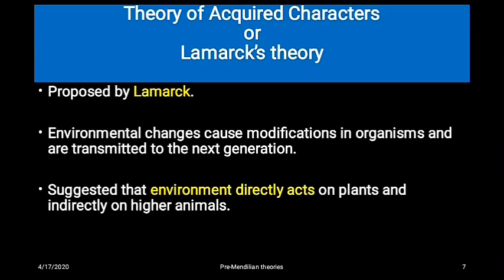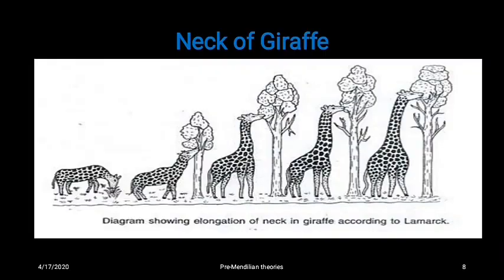The theory of acquired characters, also known as Lamarck's theory or Lamarckism, was proposed by Lamarck. According to this theory, modifications in characters or traits in plants or animals are influenced by environmental changes, and these changes are transferred from one generation to the next. He believed environmental changes directly affect plants and indirectly affect animals. To explain this, he used the example of elongation of the neck in giraffes.